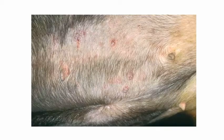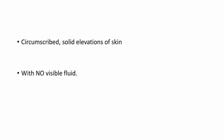Let's move on to the second one — papule. First let's see the picture of papule. This is the picture of a papule in the ventral abdomen of a dog. Papules are usually circumscribed solid elevations of skin but they don't have any visible fluid inside.